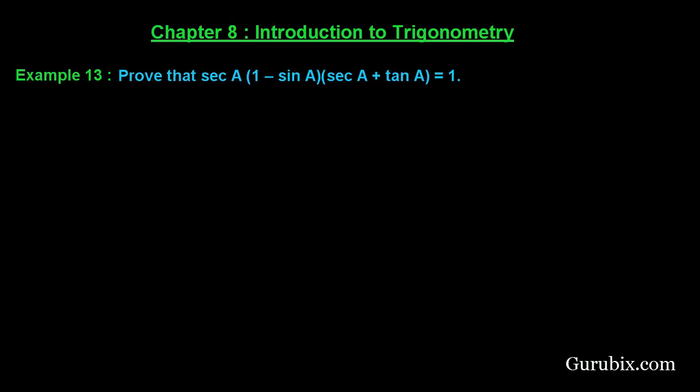Welcome friends, let us solve example number 13 of chapter 8. The example says prove that sec A(1 - sin A)(sec A + tan A) = 1. Actually this is a trigonometric identity.